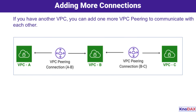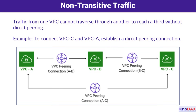Here's a scenario: if you already have two VPCs connected and you want to add another, you can simply create an additional peering connection. Each pair of VPCs needs its own direct link, since peering isn't transitive. One important limitation to remember — VPC traffic isn't transitive. This means traffic from one VPC can't pass through another to reach a third. If you need VPC A to communicate with VPC C, you'll need a direct peering connection between them.